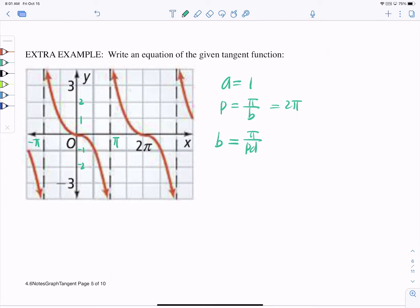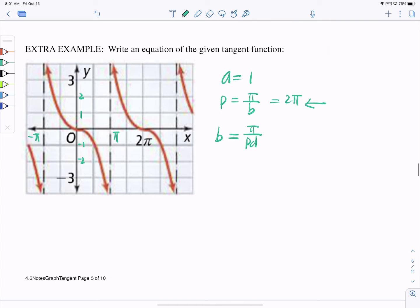So period is 2π. In our case, period is 2π, so what does that make our b? So b is π over 2π, which means our b is 1/2. It looks like there is no shifts up or down because our 1s and negative 1s are the same.